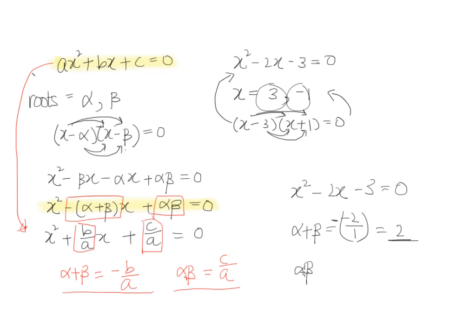Similarly, if we take alpha beta, according to the formula, we have negative 3 over 1, because c is negative 3 here, and a is 1, so it's c over a, we will get negative 3. So if we were to take this 3 multiplied by negative 1, we will get negative 3. So this is how the formula works.